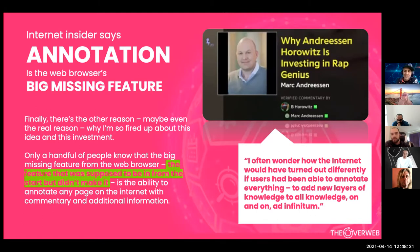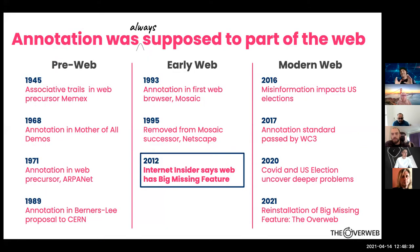Industry insider Marc Andreessen in 2012 said that only a handful of people know that the web browser has a big missing feature. It was supposed to be in there from the start: the ability to layer knowledge on top of web pages — to annotate. This is something that was in the pre-web; before the web, virtually all computing systems had annotation in their vision of something like the web.